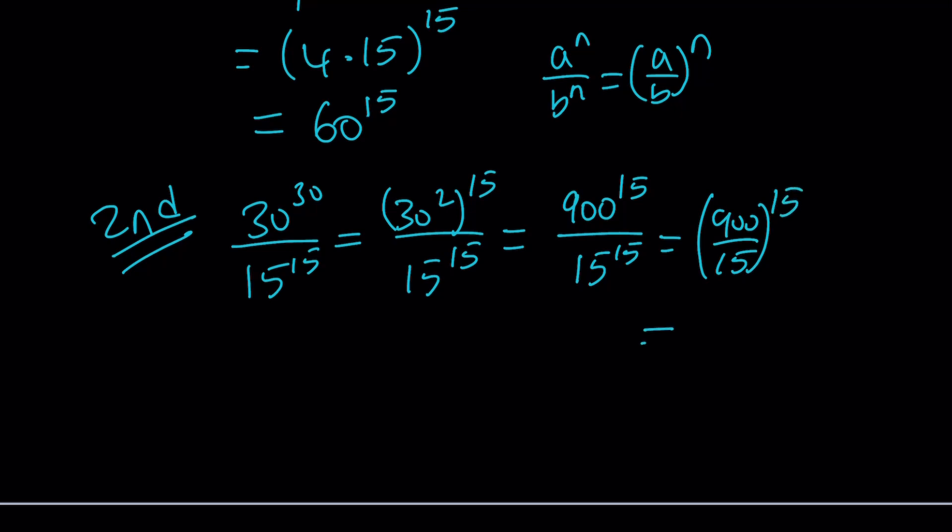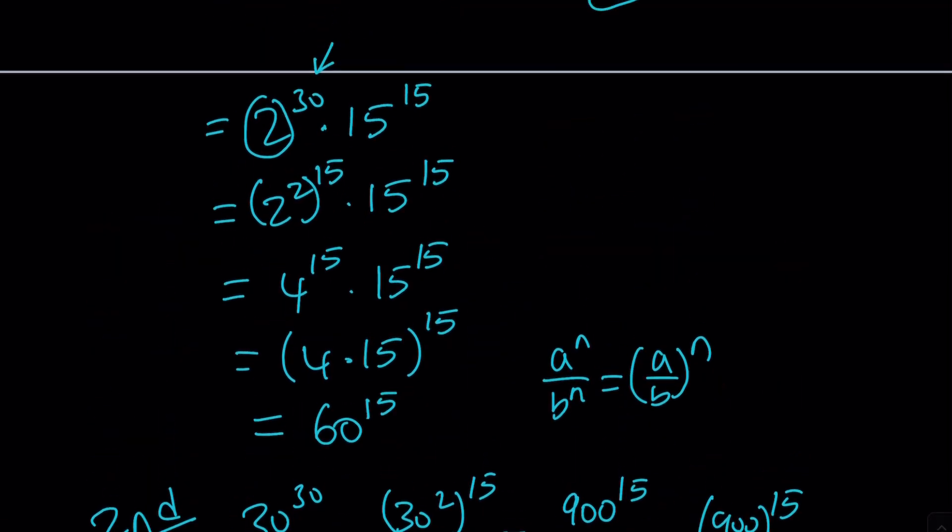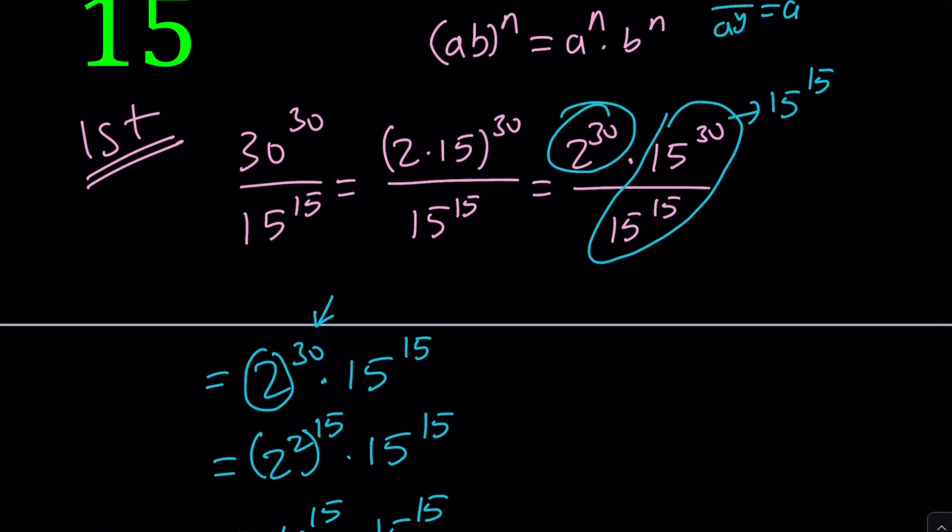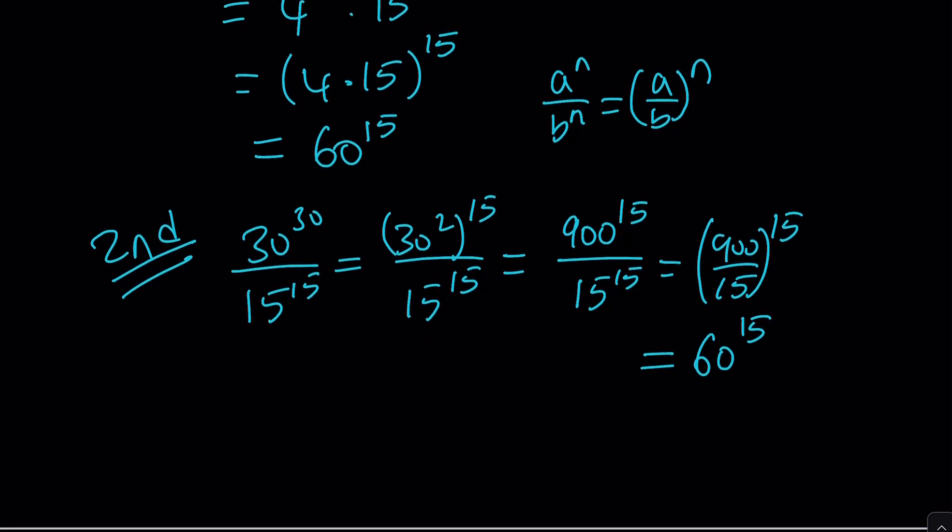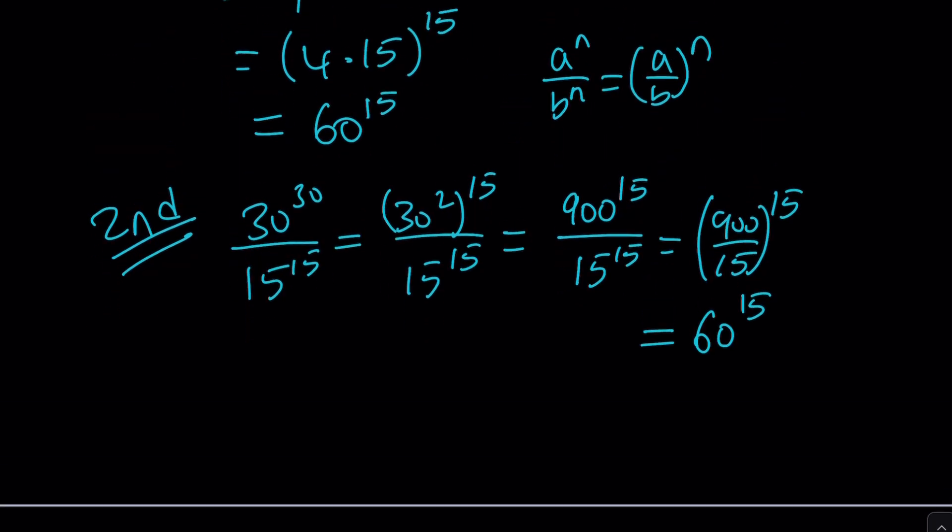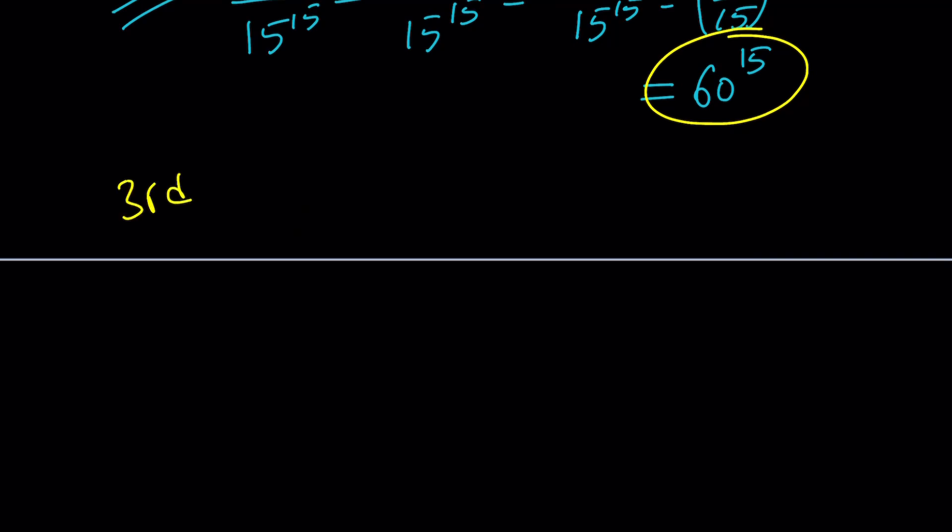So this becomes 900 divided by 15 to the power 15. But 900 divided by 15 is 60. Therefore, the final answer can be written as 60 to the power 15, which is what we found before with the first method. Now let's go ahead and take a look at the third method and then we'll finish up with that.